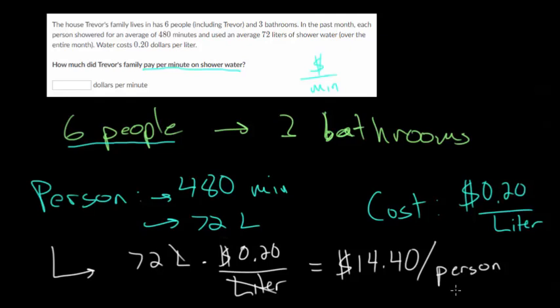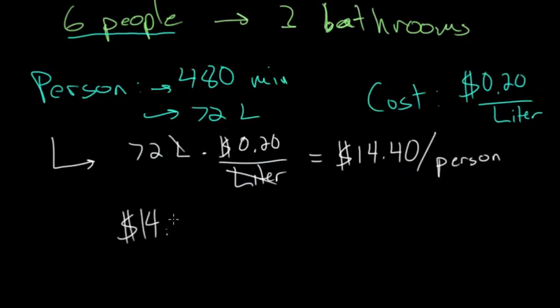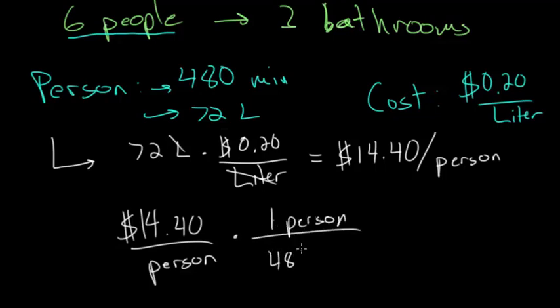The total cost would be six times that, and now we need to figure out the cost per minute. We need to figure out how many total minutes is being used in the shower for each person. There's 480 minutes in a month, so this cost is divided out between 480 minutes. We know that it's $14.40 per person, and one person uses 480 minutes in the shower. We can cancel out these units, so you get 1440 divided by 480, which works out to about 3 cents per minute.